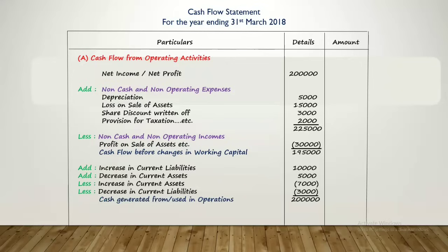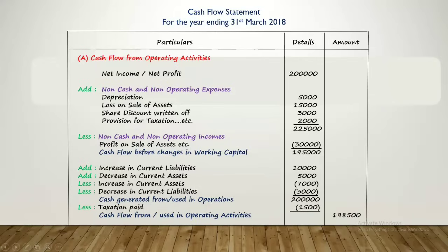After applying working capital changes, we get cash generated from or used in operations. If the amount is positive, we write 'cash generated from operations'; if negative, 'cash used in operations.' Here our amount of Rs. 2,00,000 is positive, so we write cash generated from operations. The last step is to subtract the actual taxation paid. The resulting total is written only in the amount column as cash flow from or used in operating activities.